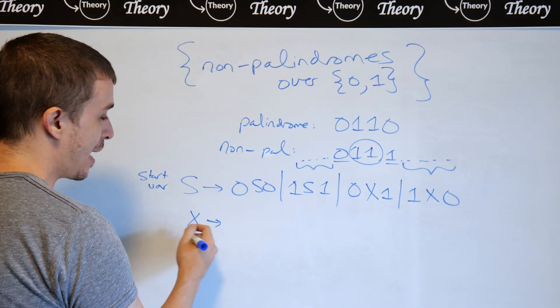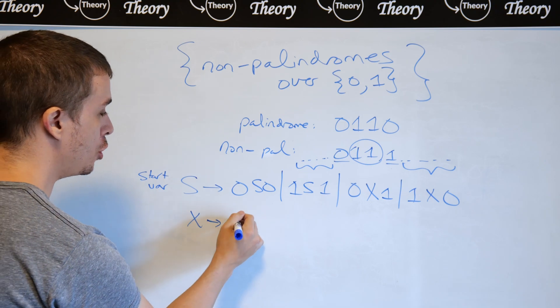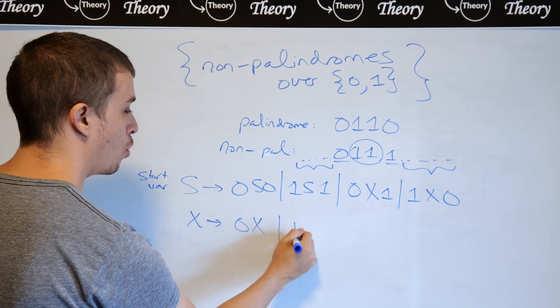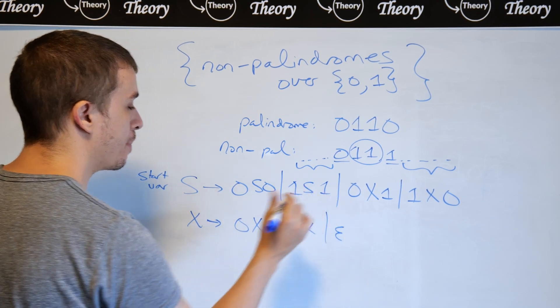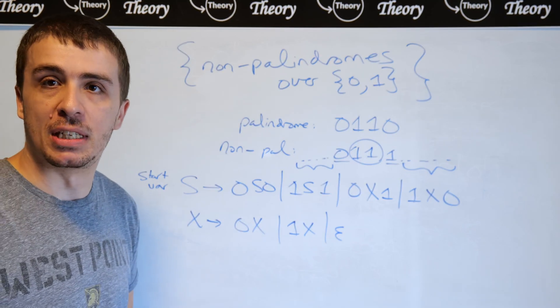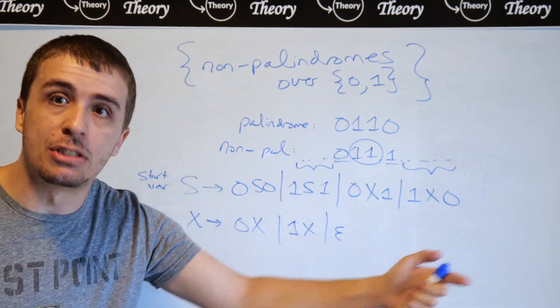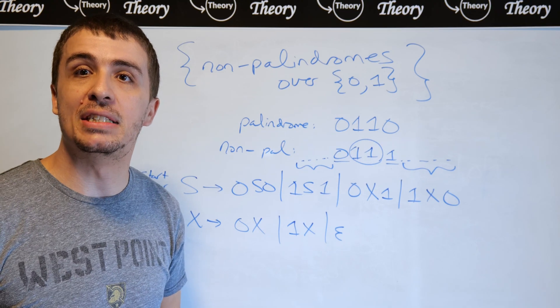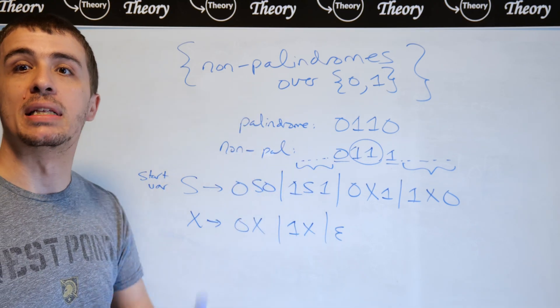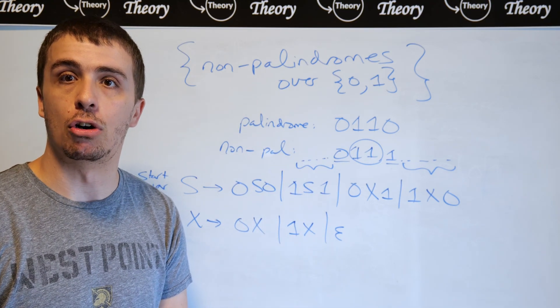And so therefore, we can, at x's point, we can just generate whatever. So 0x or 1x or empty. So it doesn't matter what happens in the middle as long as it's the same distance from either end. And so therefore, that is a context-free grammar for the set of non-palindromes over 0, 1.